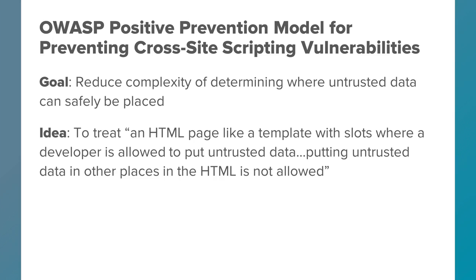Why would we want to use OWASP's positive prevention model to prevent cross-site scripting vulnerabilities? The reason is because it reduces the complexity of being able to determine where we can place untrusted data. The idea is to treat an HTML page like a template with slots where a developer is allowed to put untrusted data. Putting untrusted data in other places in your HTML page is not allowed in this positive prevention model.